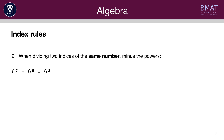Similarly, when you're dividing you can subtract the indices. So for example 6 to the 7 divided by 6 to the 5 is equal to 6 to the 2. Again, this only works for indices of the same number — here 6 is constant throughout so this works.